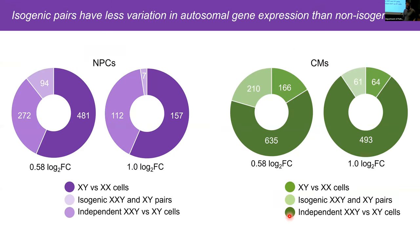We also see an effect of X chromosome dosage on autosomal gene expression in our system. When we looked at differentially expressed genes between XY and XX cells, and independently between XXY and XY cells, as well as isogenically derived XXY-XY pairs, the fewest differences occurred in the isogenic comparisons — as few as seven genes differentially expressed in NPCs and 61 in cardiomyocytes. This suggests that using isogenic pairs for analysis can help mitigate the genetic variation seen when comparing independent individuals.